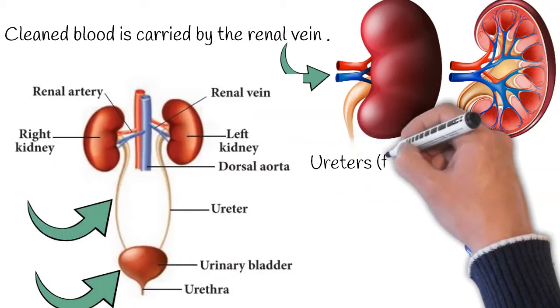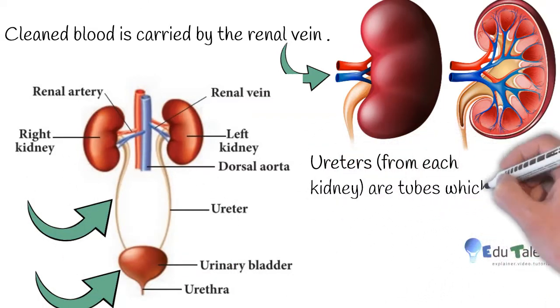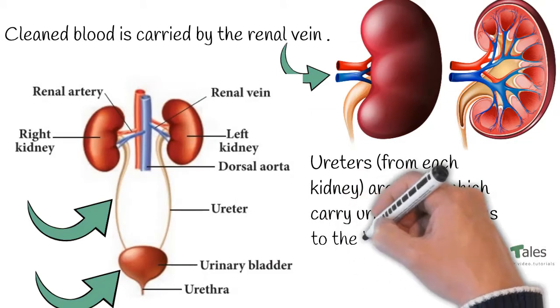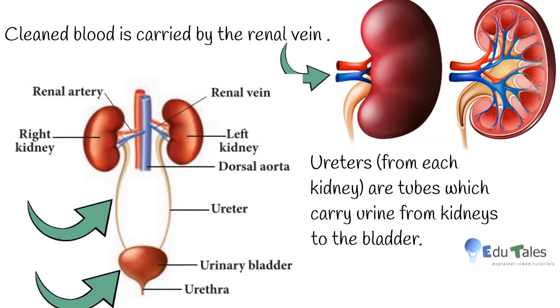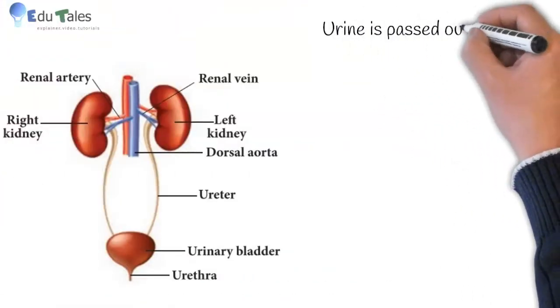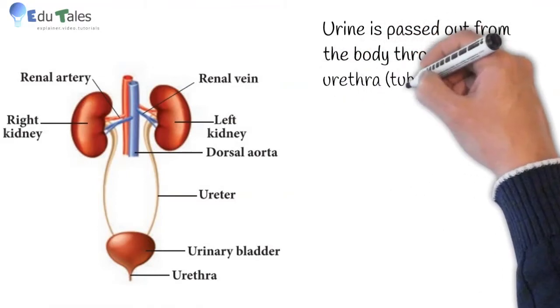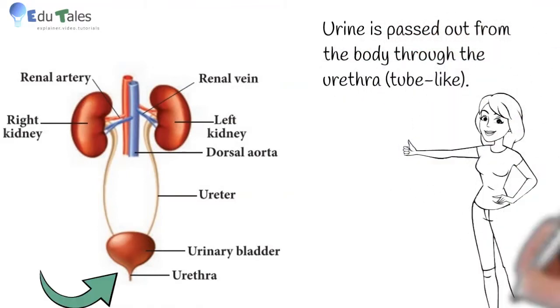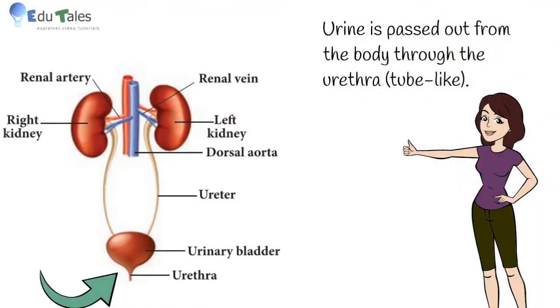Observe the diagram carefully. The urine from the kidneys enters a pair of ureters, which are tube-like structures. They carry urine from the kidney to the urinary bladder. Urinary bladder is a storage bag which stores urine, and finally urine is passed out from the body through the urethra.